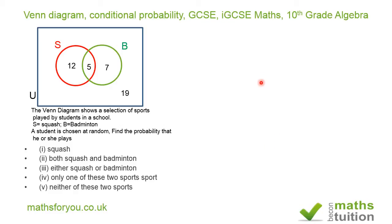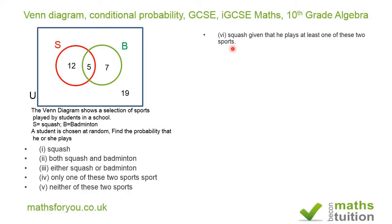The fifth question asks for the probability of playing neither of these two sports. The sixth question involves conditionality: find the probability that he or she plays squash, given that he plays at least one of these two sports.